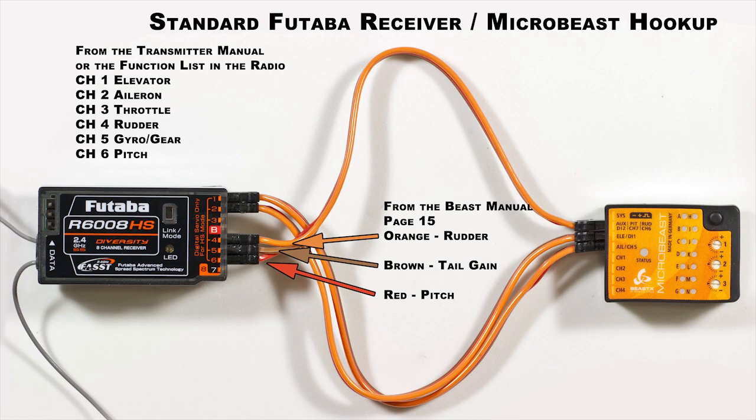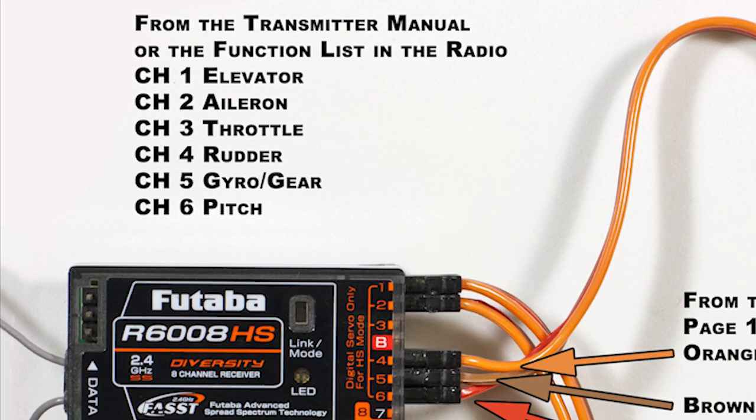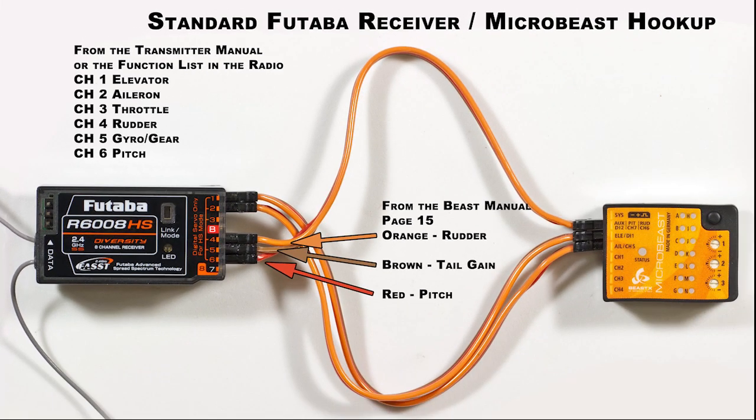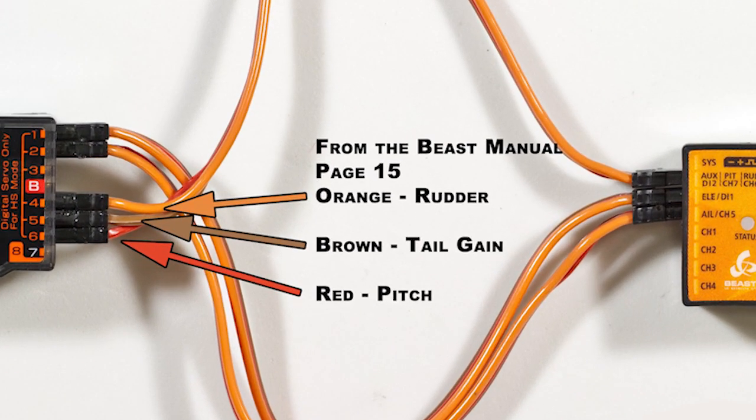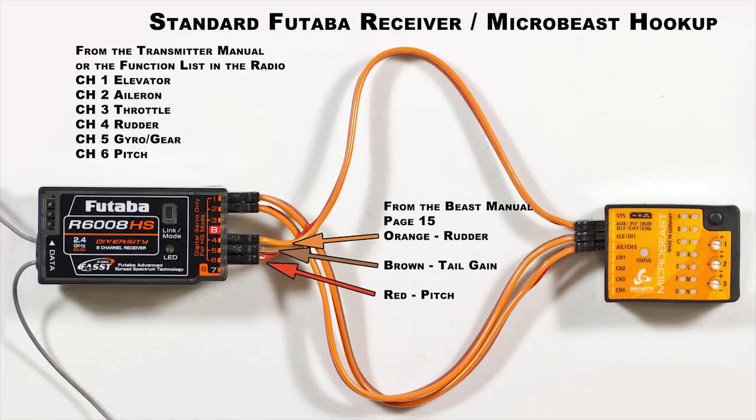Once you get your channel assignments figured out, go ahead and hook up the aileron and elevator, and then your three wires - the orange goes to the rudder, the brown goes to channel 5 or the gyro, and the red goes to pitch.